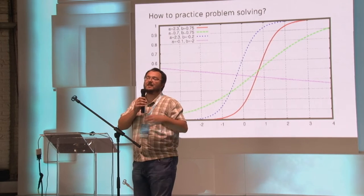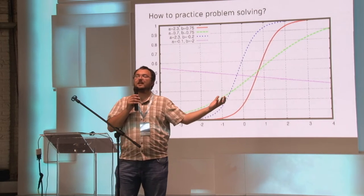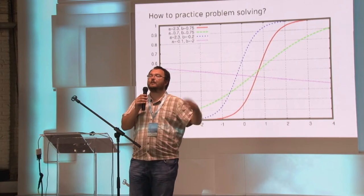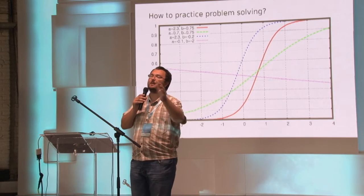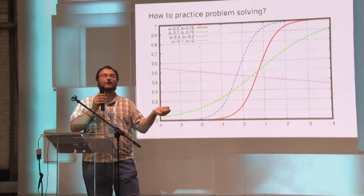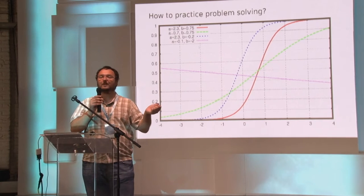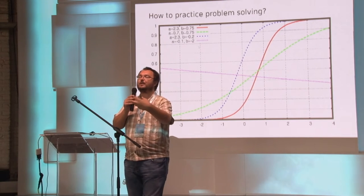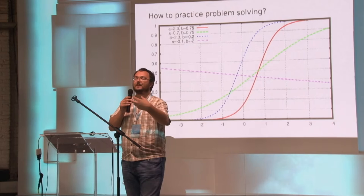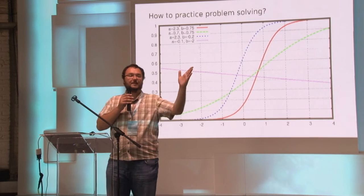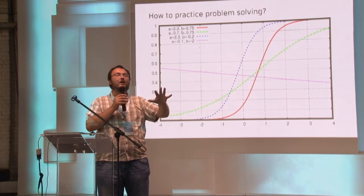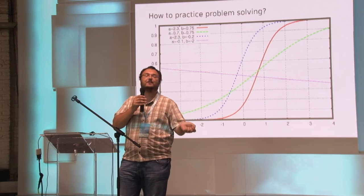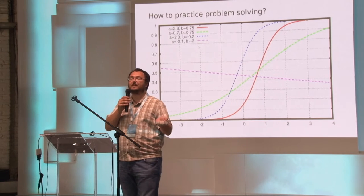If you give them tasks that are very easy for them, you will again learn nothing because everybody will solve everything, but there will be some random noise — again, no information for you. When testing, you gain the most information about the people if the tasks you give them have their difficulty centered around the actual skill levels of the competitors.